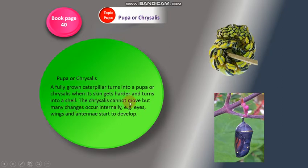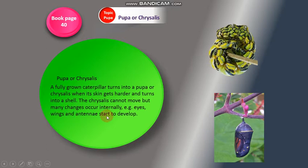The chrysalis cannot move, but many changes occur internally. The butterfly's wings and antennae start to develop.